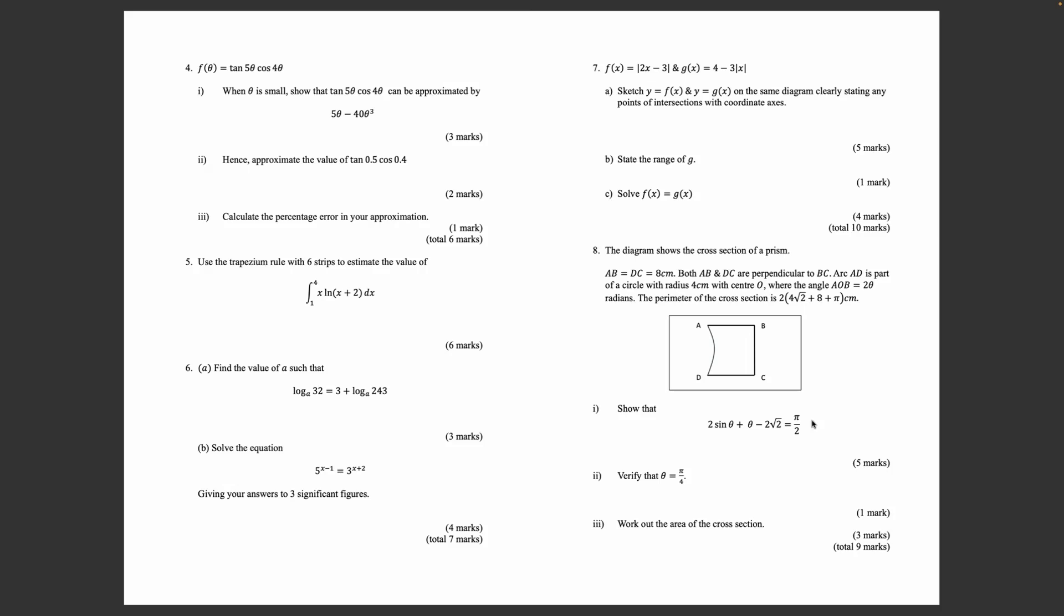Question 8: The diagram shows the cross section of a prism. AB = DC = 8 centimeters. Both AB and DC are perpendicular to BC.